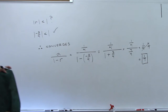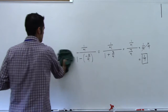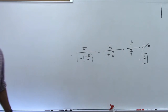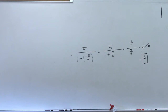Number 10 — work it yourself, but here's a hint: it diverges because the absolute value of r turns out to be 10/9, which has absolute value greater than 1.